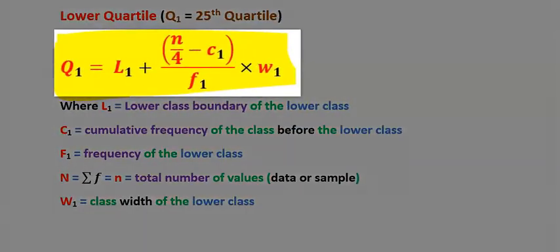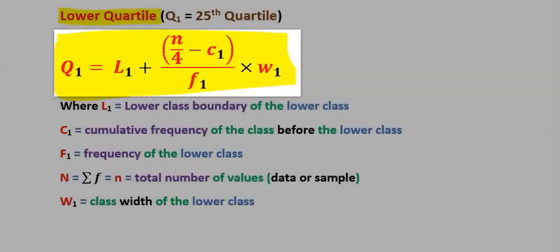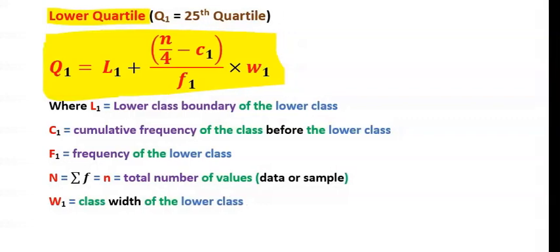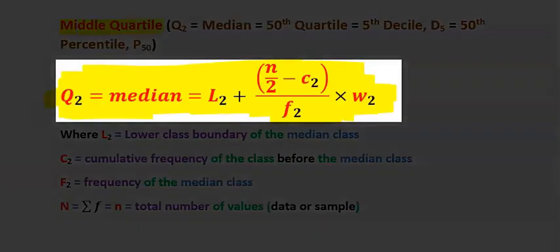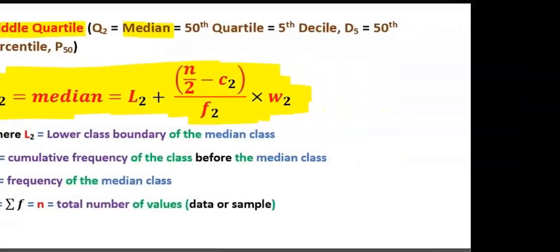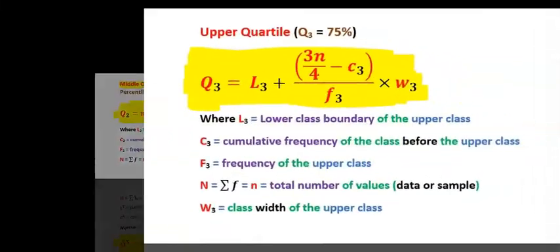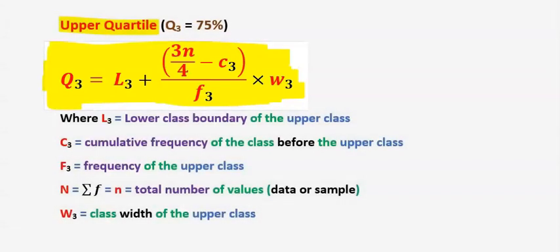To obtain the lower quartile, we are going to need this formula. To compute for the middle quartile, which is the same thing as the median, we are going to need this formula. Also, to compute for the upper quartile, we are going to need this formula.